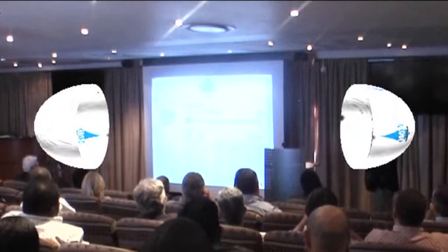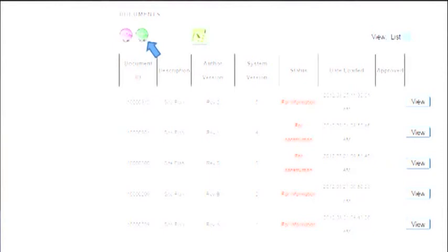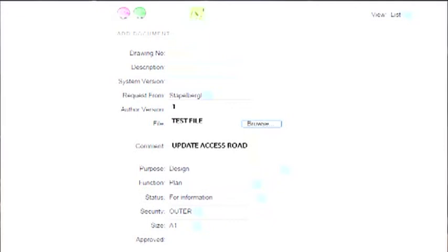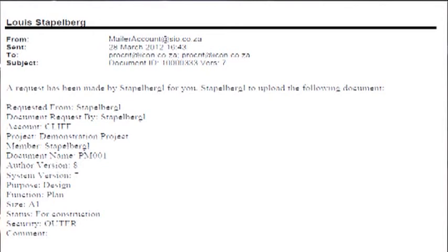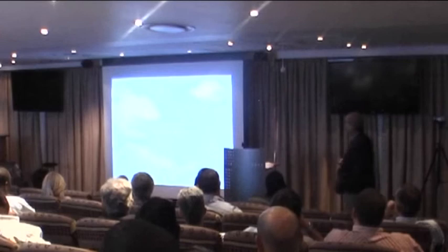To insert a new revision, it's exactly the same process. I just go to the plus button, and I insert my author revision, because the author revision and the system revision might be different, because as an architect, you might have done some revisions that you didn't put on the system. So you might be on rev 6, where the system's on rev 2. So you put your author revision. You select the file you want to put in, add a comment. You're updating the access road. The purpose of the drawing is for design. It's a plan. It's for information. It's got an outer security level, so anyone can read it. It's an A1 drawing for printing purposes. And it sends me a coded email. I reply to that email, attach the drawing, and send it.